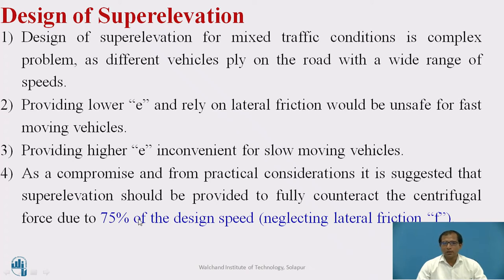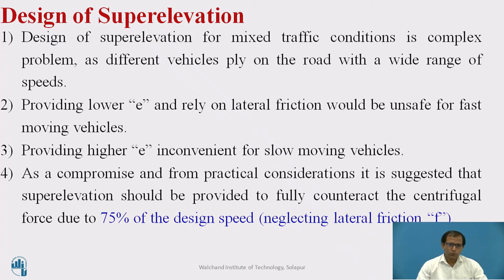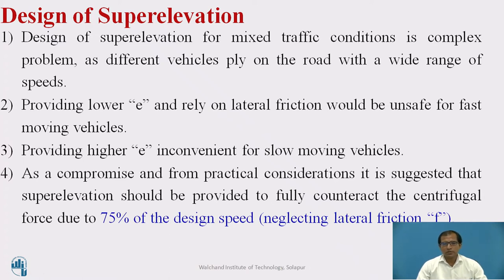Whatever E value you calculate, it is for 75% of the design speed. Whatever speed is given, multiply by 75% and use that speed for designing the super elevation. This holds good only when the maximum super elevation allowed is up to 7%. Beyond that, we have to either increase the radius or decrease the speed of the vehicle.